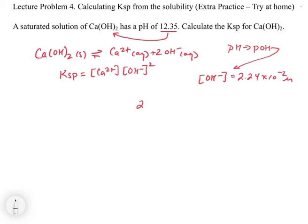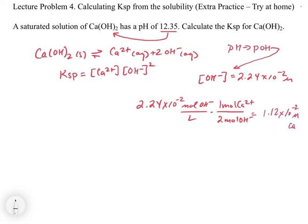We know that 2.24 times 10 to the minus 2 is really the same thing as moles of OH minus per liter. In this case we can use stoichiometry knowing that there are two moles of OH minus for every one mole of calcium 2 plus. We can compute our calcium 2 plus concentration to be 1.12 times 10 to the minus 2 molar calcium 2 plus.